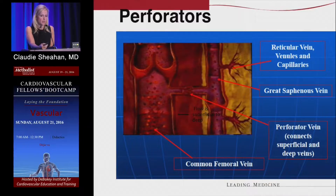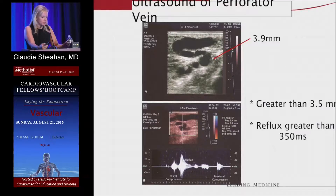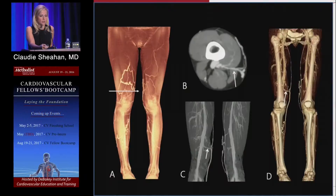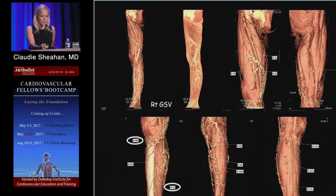You can see here another depiction of how reticular veins and capillaries are all connected through the superficial venous system to the perforator veins and into the deep venous system. There may be valves in the perforator veins, and incompetence is easily demonstrated on duplex ultrasound. One sign of reflux in a perforator vein is size — anything greater than 3.5 millimeters in diameter. They can be very tortuous, as seen on this duplex picture. Reflux greater than 350 milliseconds is also diagnostic of reflux in the perforator vein. A CT venogram can show very clearly a perforator vein running from the saphenous vein straight to the deep vein.